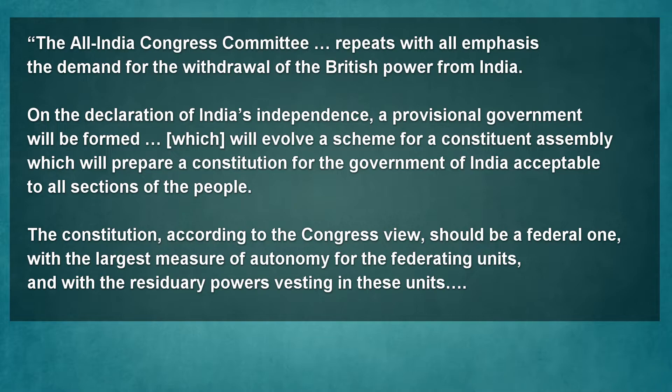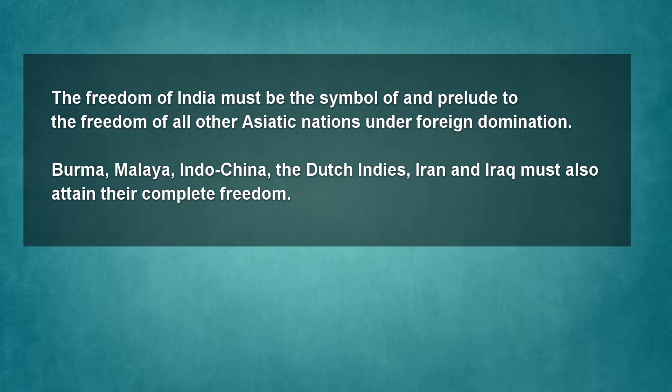I'll quote quite a large section of it because it's really fundamental. The All India Congress Committee repeats with all emphasis the demand for the withdrawal of the British power from India. On the declaration of India's independence, a provisional government will be formed which will evolve a scheme for a constituent assembly which will prepare a constitution for the government of India acceptable to all sections of the people. The constitution, according to the Congress view, should be a federal one with the largest measure of autonomy for the federating units and with the residuary powers resting in these units. The freedom of India must be the symbol of and prelude to the freedom of all other Asiatic nations under foreign domination.